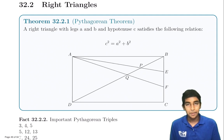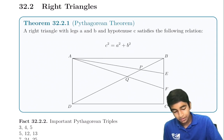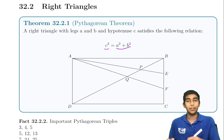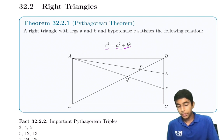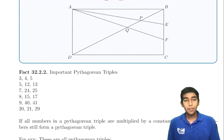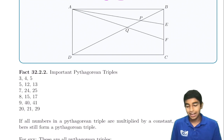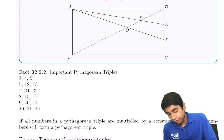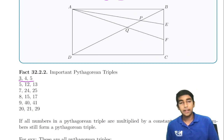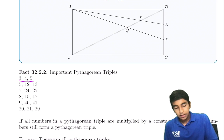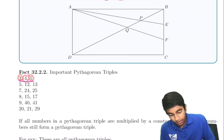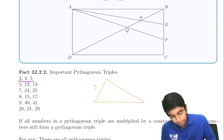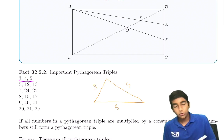The Pythagorean theorem states that A² + B² = C² in a right triangle. Most of you are familiar with this, but there are many important Pythagorean triples that can save you a lot of time. These triples mean that if a triangle has sides 3, 4, 5, it will be a right triangle.